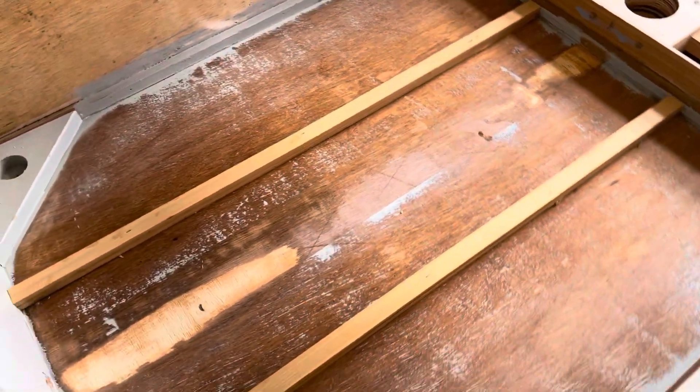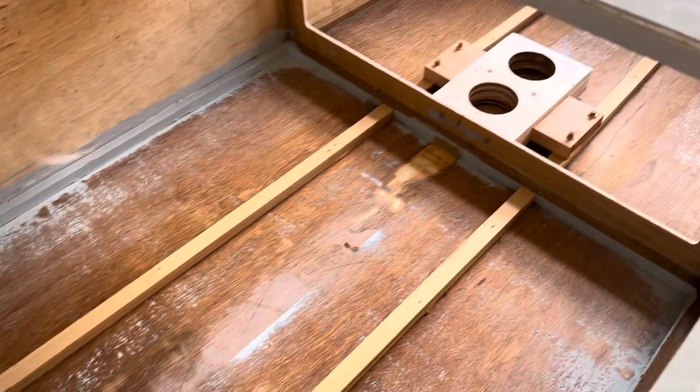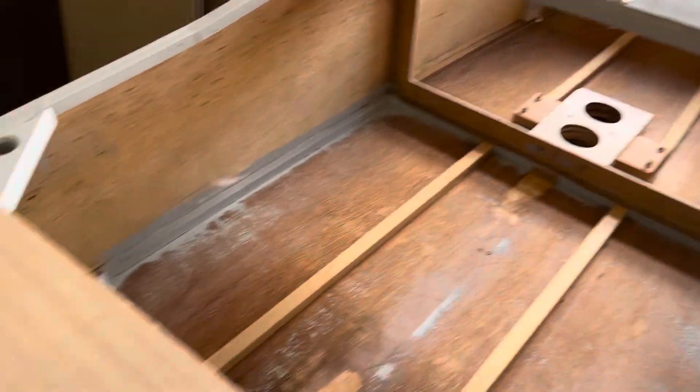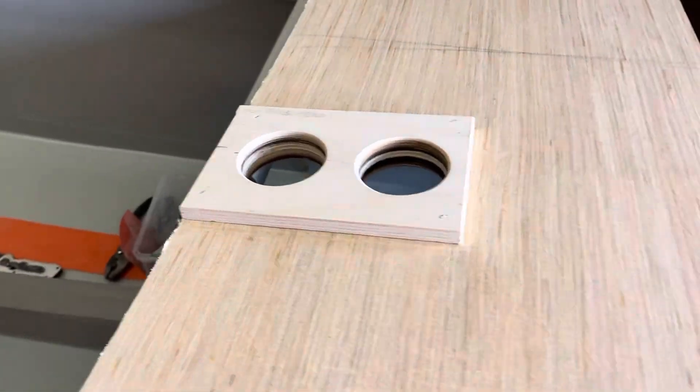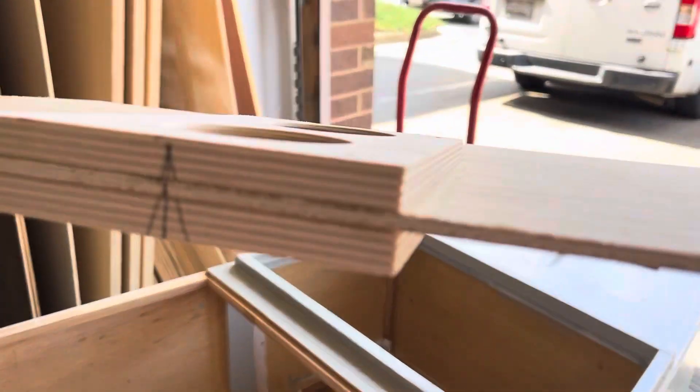Now I'm gonna thoroughly prime, paint, and seal this. And here's the top part—this is doubled up. Instead of quarter inch, I used half inch. Looks like this.